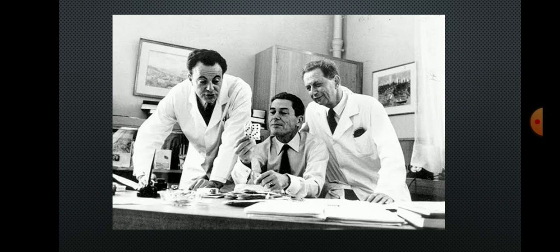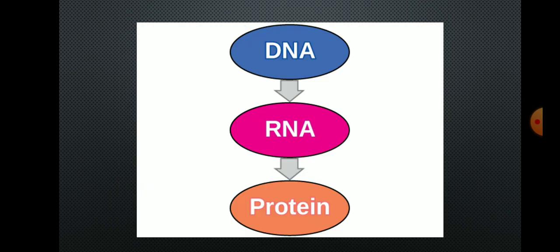In 1961, the French geneticists François Jacob and Jacques Monod proposed a model for the process of protein synthesis. Proteins are synthesized from DNA with the help of RNA.